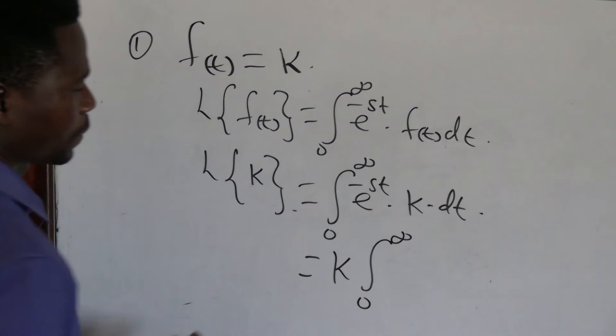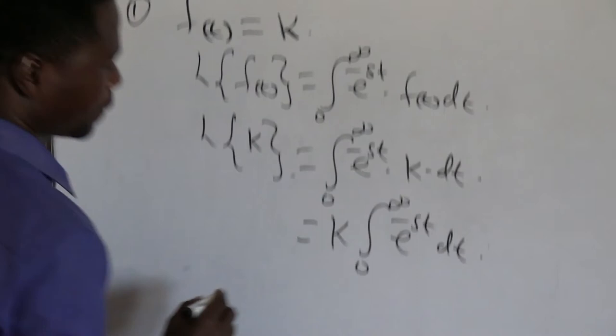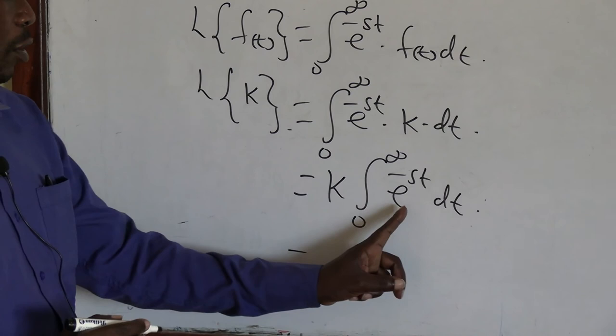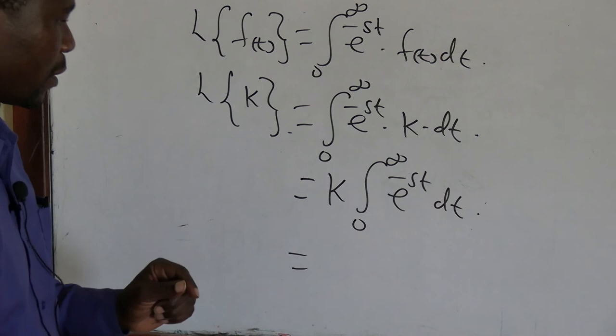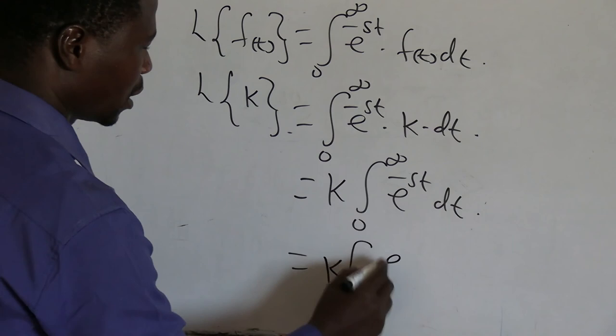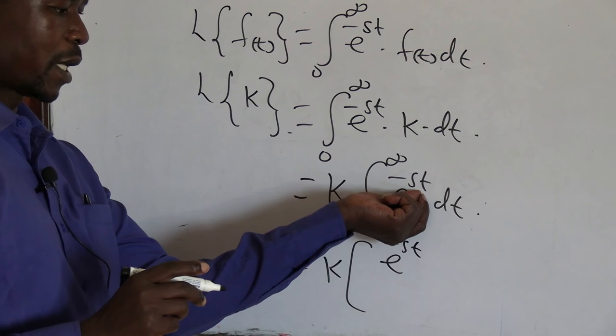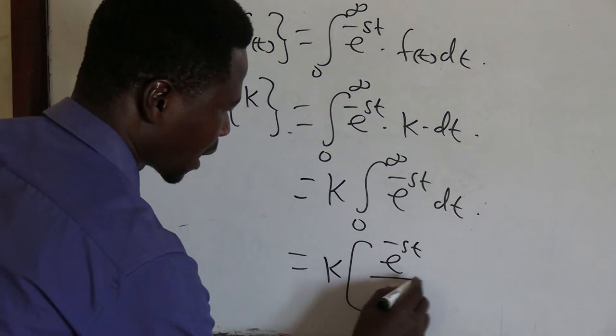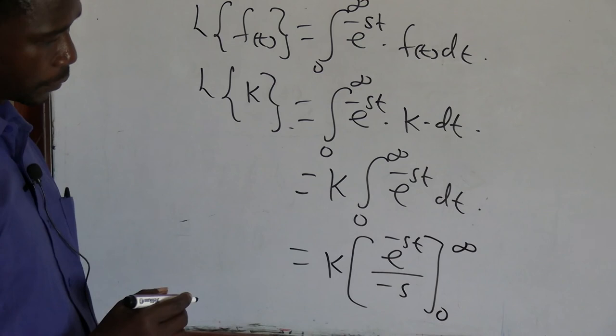So we have k times the integral from 0 to infinity of exponential e power negative st dt. Integrating this, remembering this is a function of a function, we have k into exponential e power negative st. The differential of the power of the exponential is actually equals to negative s, so we divide the exponential by negative s, with the limit from 0 to infinity.